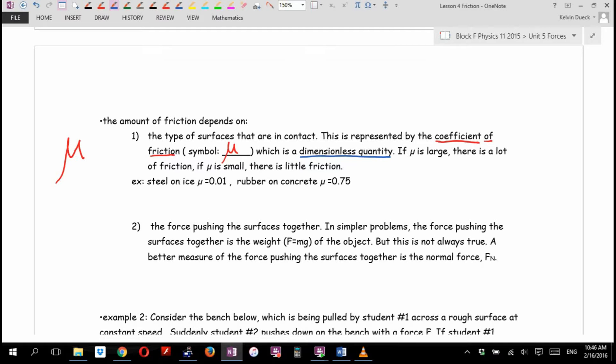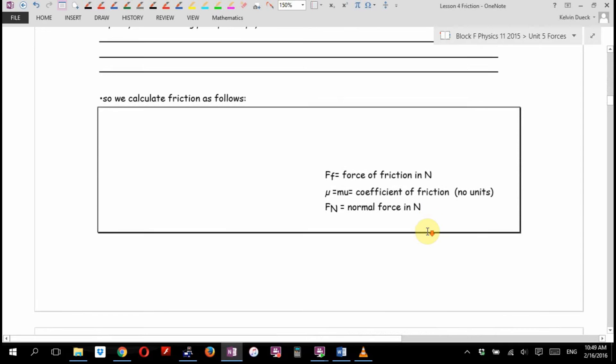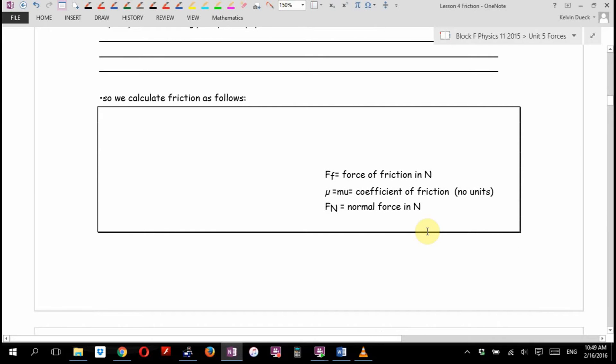The other thing that it sort of depends on is how heavy objects are. But I'm going to pause the video for just a second and convince you that that's not quite right. We have the force pushing the surface together. In simpler problems, it's mg, the weight. But that's only if you have no other forces in your question. If you want to be consistent and be able to handle other forces, like someone pushing down at an angle or lifting up at an angle, really what we want is the normal force.